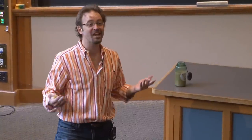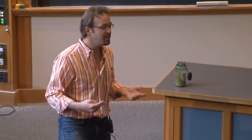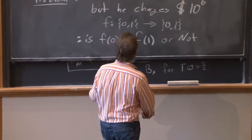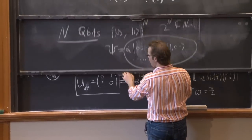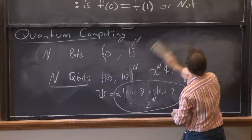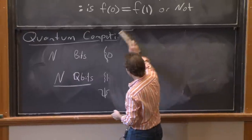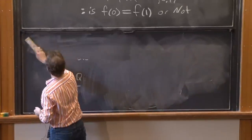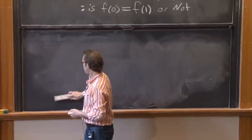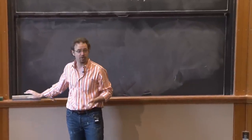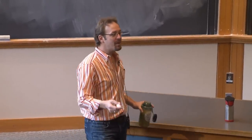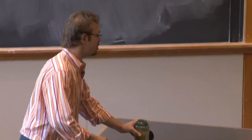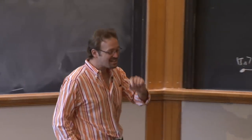He charges a million dollars in order to evaluate the function. You say 'Hey Matt, what's f(0)?' He says 'Give me a million bucks,' you give it to him, and he says '1.' And here's the question — this is the actual problem: is f(0) equal to f(1) or not? Classically this is straightforward — you evaluate f twice. You evaluate f(0), you get a number; you evaluate f(1), you get a number; you compare them. How much does that cost? Two million bucks.